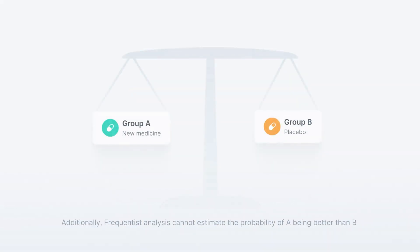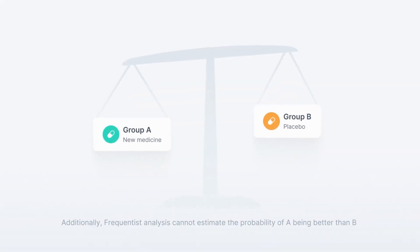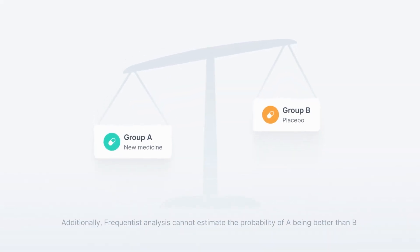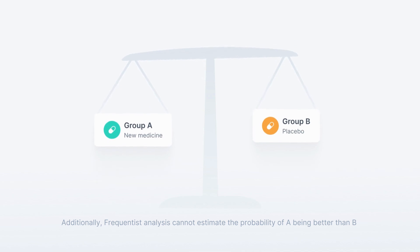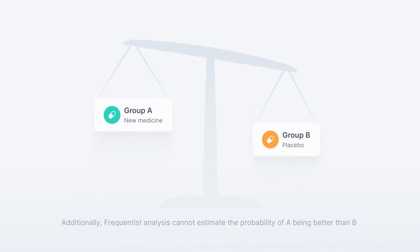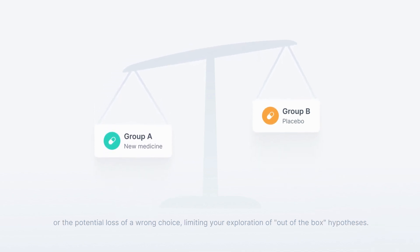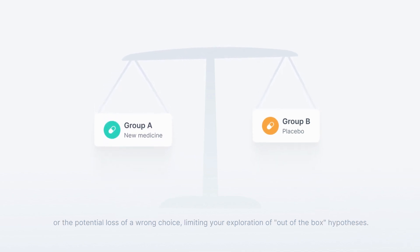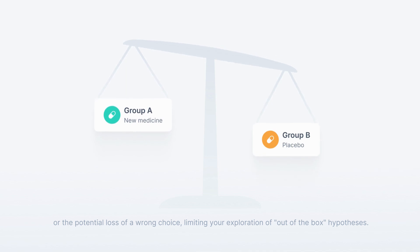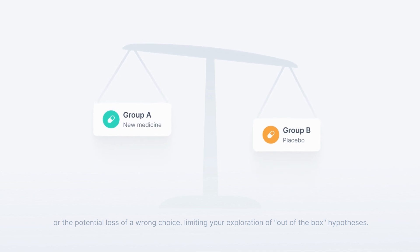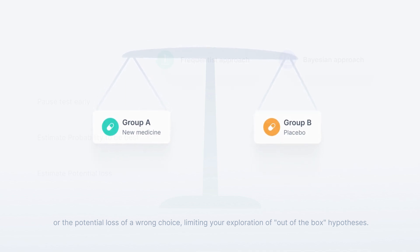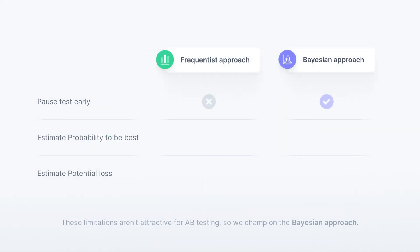Additionally, Frequentist analysis cannot estimate the probability of A being better than B, or the potential loss of a wrong choice, limiting your exploration of out-of-the-box hypotheses. These limitations aren't attractive for A/B testing, so we champion the Bayesian approach.